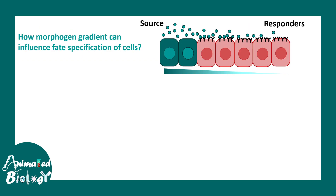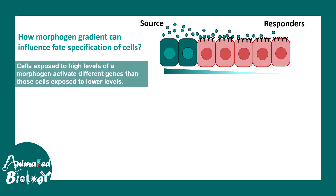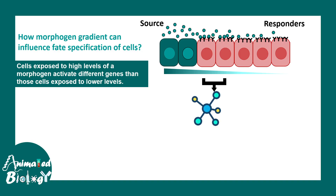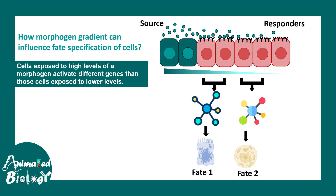How can a morphogen gradient influence cell fate specification? Cells exposed to high levels of morphogen can activate one set of genes, while cells exposed to lower levels activate a different set of genes, evoking two different fates. Based on concentration, there could be different transcriptional or gene regulatory programs activated — high concentration leading to fate one, intermediate to fate two, and very low concentration activating a completely different transcriptional module leading to fate three.